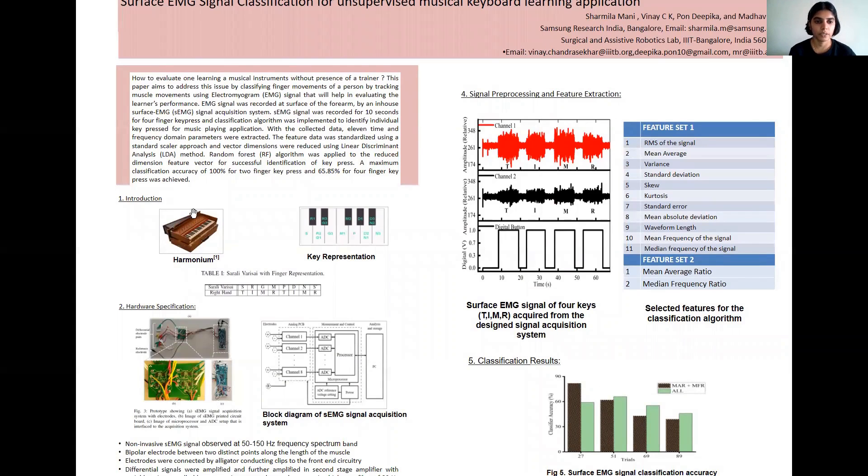The picture here is a harmonium. This is a traditional Indian musical instrument that is used in India. To play this instrument only the first four fingers of a right hand have been used—that is thumb, index, middle, and ring.